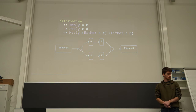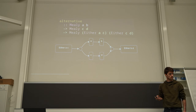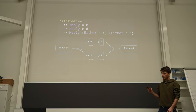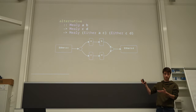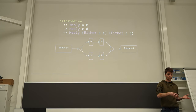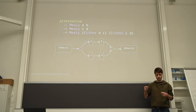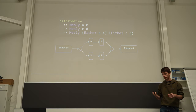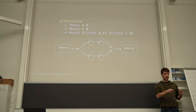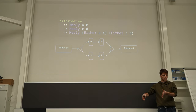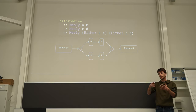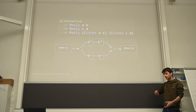Question: Would these composition functions also be possible with the first representation? The answer is that the additional type parameter — basically the state — is quite an issue because you need to compute what's the state space of the composed machine, which could be done theoretically, but is more complex at the type level than at the value level. So with the second representation it's easier, and it's possible with the first, but more complicated.